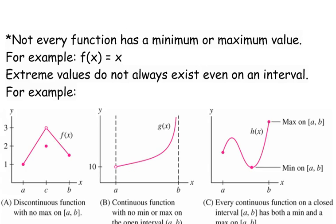Part C shows that every continuous function on a closed interval has both a minimum and a maximum on that interval. Here is your minimum — whatever this x value is and whatever its y value is, this is the minimum value since it's less than all the other y values. Here's your maximum value — this one's on the endpoint. Now there's another maximum, which we would call a local maximum. It's not the absolute maximum; this endpoint is the absolute max. This other one would be a local max.